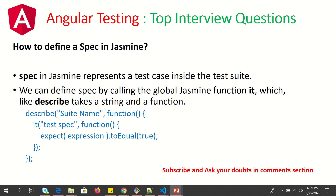How do you define a spec file in Jasmine? A spec file represents a test case inside the test suite. Each spec file is like a test script, and the test scripts together become the test suite. We define a spec by calling the global Jasmine function 'it', and we describe the test steps inside it. We write a describe block — it takes two parameters: a string and a callback function. Describe tells what to do when the test script is called, and inside the 'it' block we write the methods and call the assertions using expect statements.